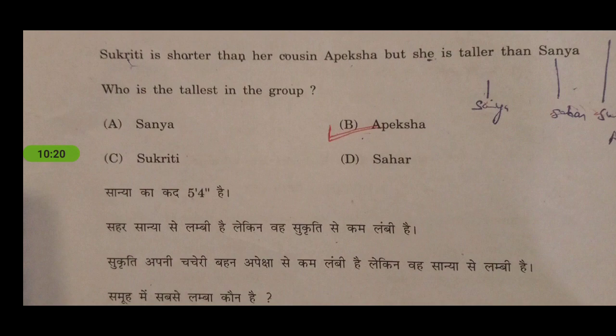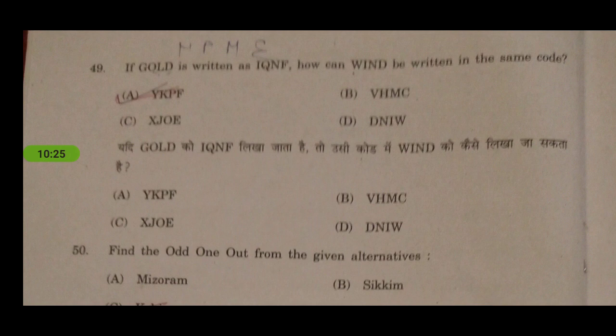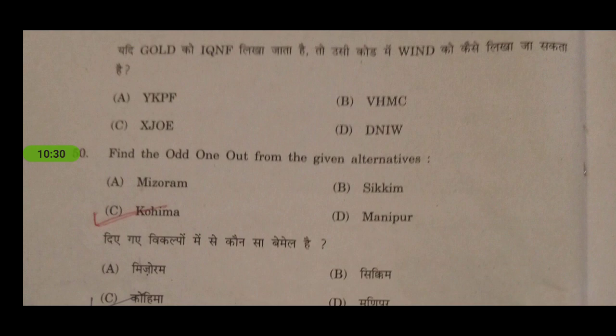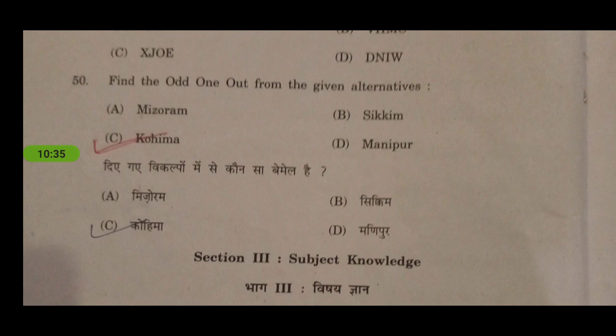Next: if GOLD is written as IQNF, how can WIND be written in the same code? The answer would be YKPF. Next: find the odd one out from the given alternatives — the answer is Kohima, because all others are states while Kohima is the capital of Nagaland.